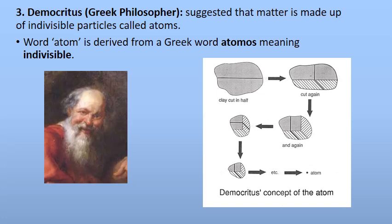Then came Greek philosopher Democritus, who gave us the concept of the atom. Although he introduced the concept, today's studies show his idea was not entirely accurate, as there was not much advancement in science at the time. With the resources available to him, he deduced that matter is made up of indivisible particles called atoms. 'Indivisible' is an important word here — it means that an atom cannot be divided into subatomic particles and there is nothing smaller than an atom.